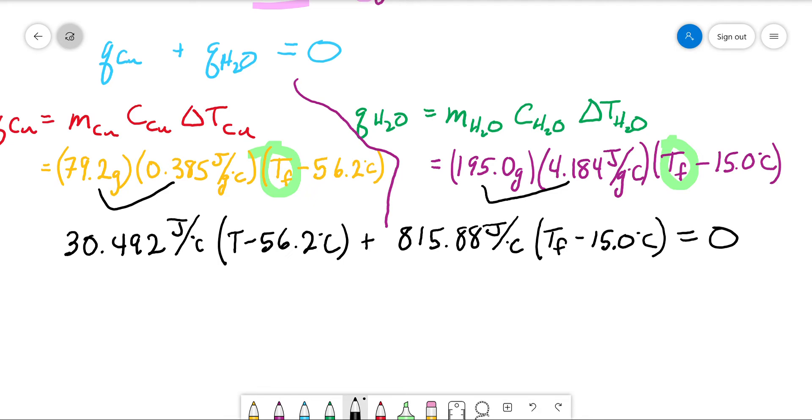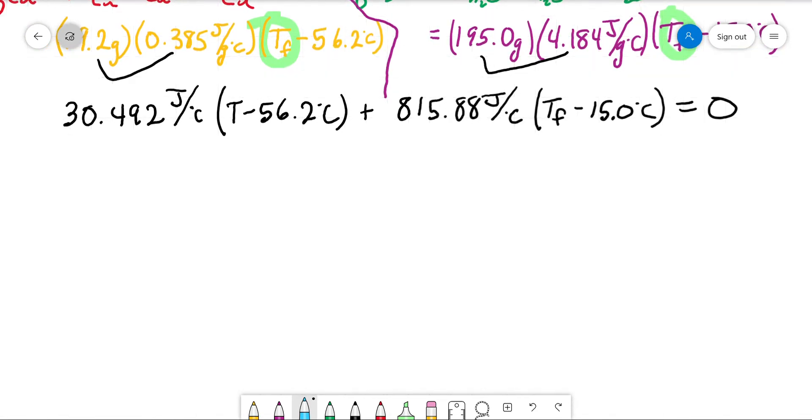I simplified and plugged everything into the equation just to save a step. Now let's go simplify again. From this point out, it's really just algebra solving for T final. We have 30.492 joules per degree Celsius times T final minus 1713.65 joules plus 815.88 joules per degree Celsius times T final minus 1223.2 joules equals zero.